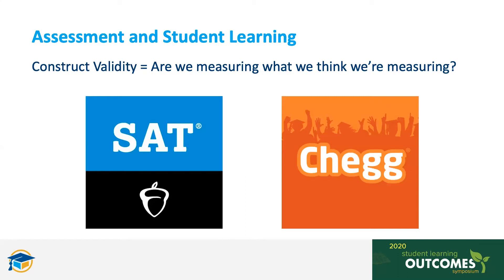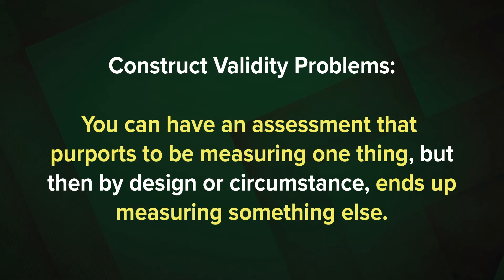The second example is Chegg.com, which came under fire last quarter because, although it is ostensibly a homework help service, it was discovered that some students in remote courses in spring 2020 were using it to procure answers for remote final exams. This is a significant problem — not just because we find cheating behavior problematic on a moral or social contract level, but because it throws into question the validity of those exam results. We can no longer be confident that a student's exam score is an approximate measure of their learning in the course, but perhaps a measure of something else: their knowledge of the service, the number of devices and screens they can access at any given time. These are both construct validity problems, because they demonstrate that you can have an assessment that purports to be measuring one thing, but ultimately, by design or circumstance, it ends up measuring something else.